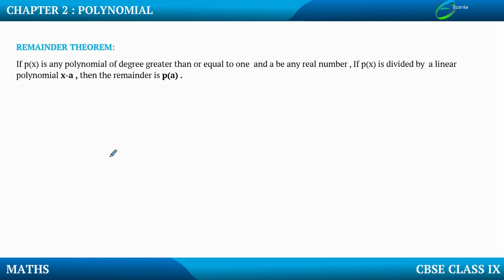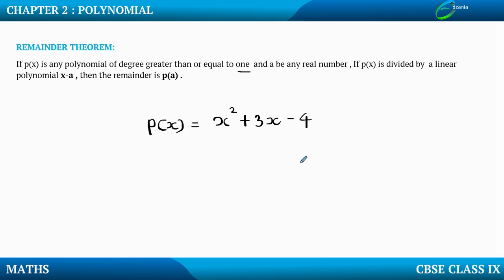This is slightly complicated to understand, but I will give you a simple example to make it clear. If p(x) is any polynomial of degree greater than or equal to 1 — meaning the degree can be 1, 2, 3, 4, 5, 6 — we are not supposed to take any constant polynomial. So let me assume p(x) = x² + 3x - 4. The degree of this polynomial is 2, which is greater than or equal to 1.